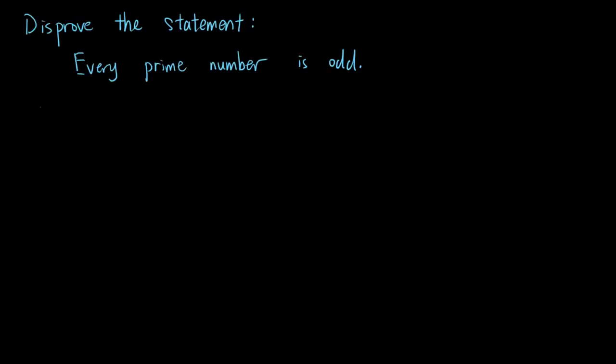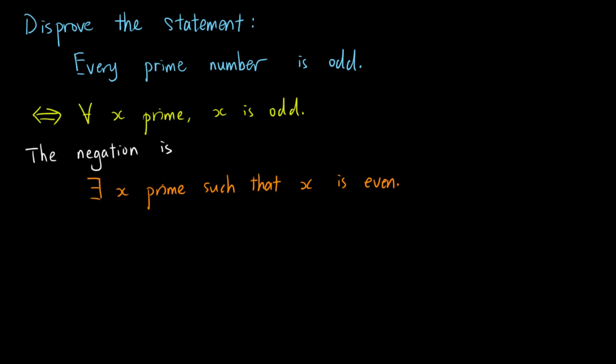Let's consider this example. We want to disprove the statement, every prime number is odd. We can write the statement as, for all x prime, x is odd. The negation is, there exists x prime, such that x is even. Can we find such an x? Yes, we can.